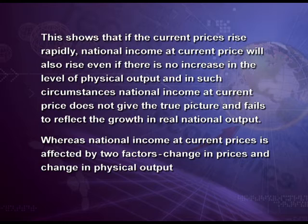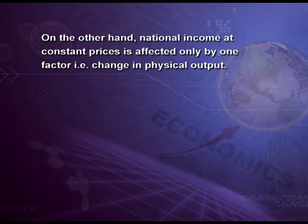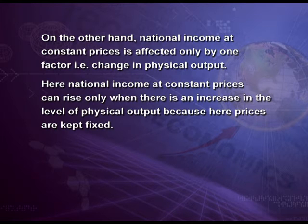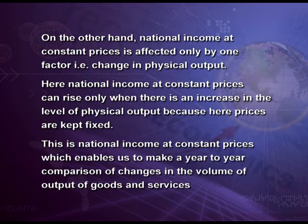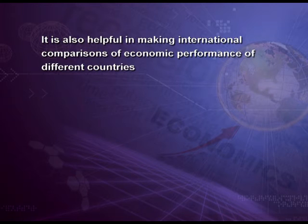National income at current prices is affected by two factors: change in price and change in physical output. On the other hand, national income at constant prices is affected only by one factor — change in physical output — as prices are fixed. National income at constant prices can rise only when there is a real increase in physical output. This enables us to make year-to-year comparisons of changes in the volume of output of goods and services, and is also helpful in making international comparisons of economic performance. It is thus proved that national income at constant prices shows the real picture.